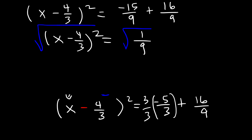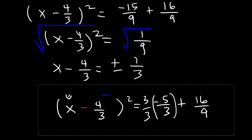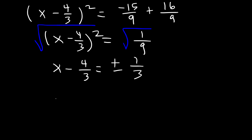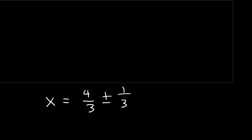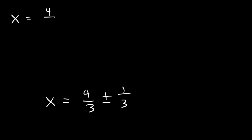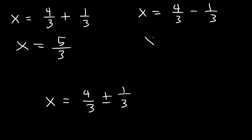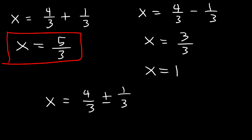Now let's take the square root of both sides. So x minus 4 over 3 is going to be plus or minus — the square root of 1 is 1 and the square root of 9 is 3 — so it's plus or minus 1 third. Now let's add 4 over 3 to both sides: x equals 4 over 3 plus or minus 1 over 3. Separating into two answers: 4 over 3 plus 1 over 3 gives 5 over 3, and 4 over 3 minus 1 over 3 gives 3 over 3, which equals 1. So the two answers are 5 over 3 and 1.